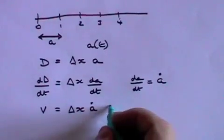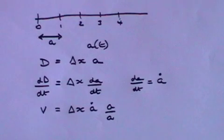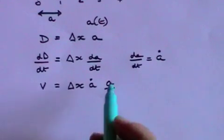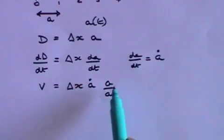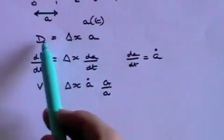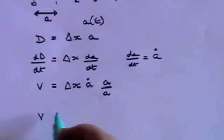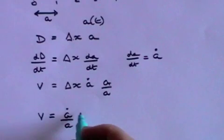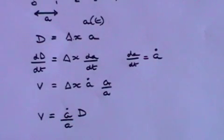We can multiply by a over a because that is simply multiplying by one. But now delta x times a is D. So now we can say that v equals a dot over a times D.